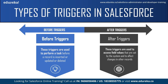After triggers are used to access field values that are already set by the system, such as a record's ID, date, or phone number field, and to affect changes in other records as well. These triggers are usually used to update or validate record values after they are saved to the database. Also, after triggers are read only — you cannot make any changes to them.